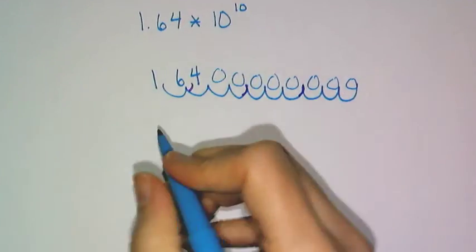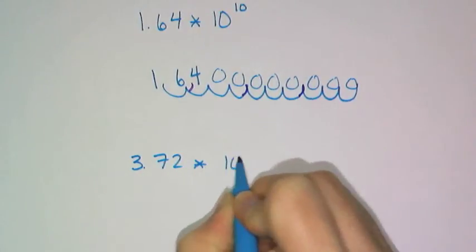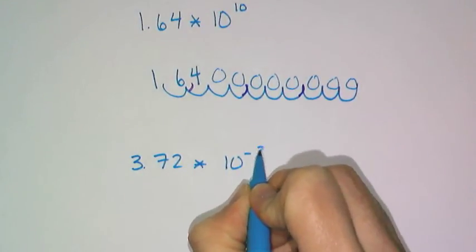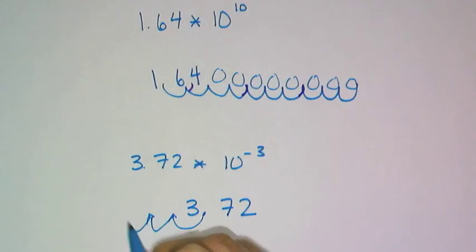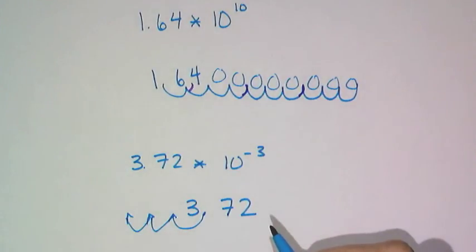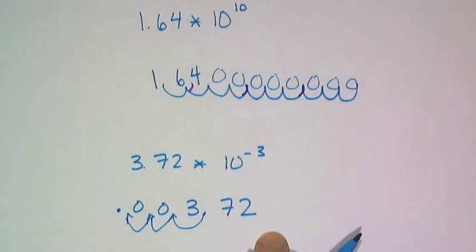And then if I have something to a negative exponent, I do the same thing. But I know negative exponents mean numbers that are closer to 0 and not super huge, but super tiny. So I have to move my decimal in the opposite direction, in this case 3 spaces. And so I have to put in 2 placeholder 0s, and so I get this value right there.